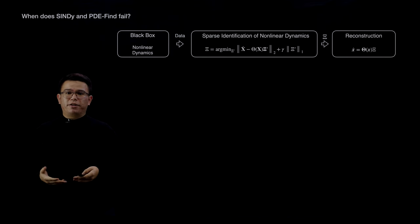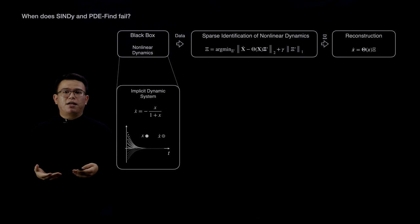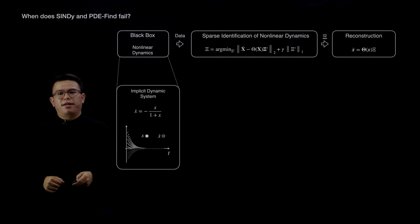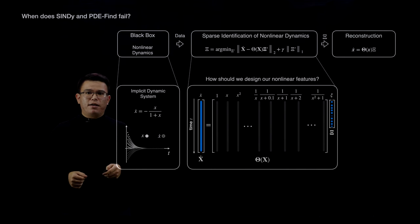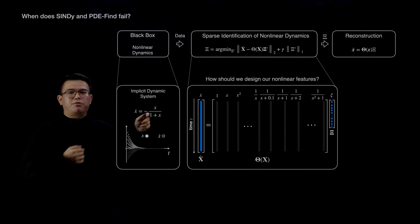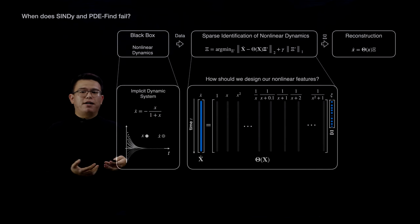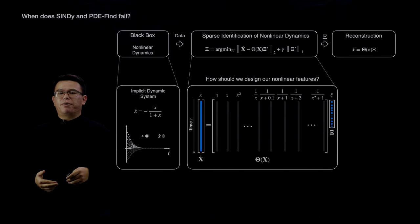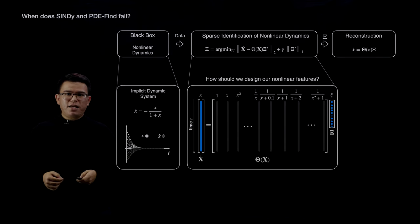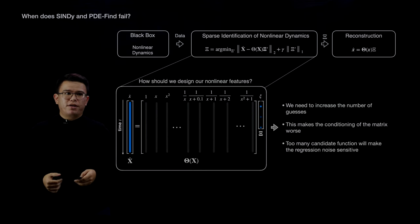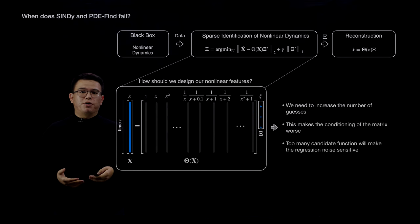Although PDE-FIND and CINDY-PI can be applied to many applications, they do have some drawbacks. For example, they cannot be used to identify rational systems. Suppose we have a system x-dot equals minus x divided by sin(x) and try to identify it using CINDY. Since we have a rational term, we might have to add rational candidate functions to our library. Without prior knowledge of what numerators and denominators we might have, we end up with a huge library with infinitely many combinations, which worsens the matrix conditioning and makes the sparse regression really noise-sensitive.